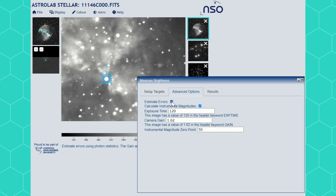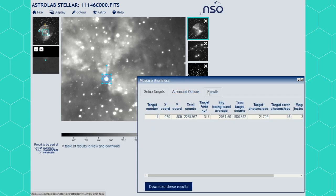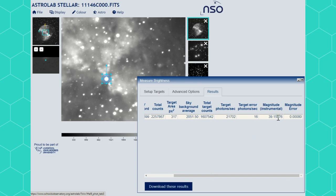You can also add errors to your values by clicking the estimate errors box. Now when you return to your results tab you will see extra information like the number of photons that have hit the camera each second of the exposure, the error on this value, and the instrumental magnitude of your object, again with an error.